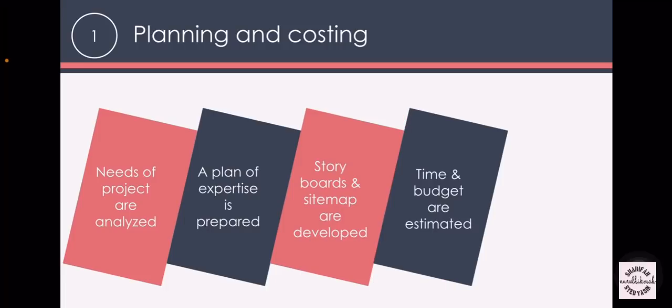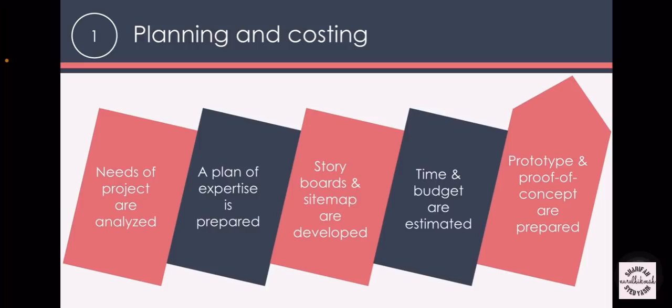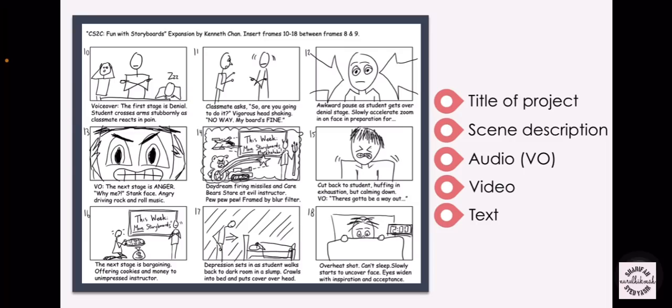Then the time and budget are prepared. Lastly, a short prototype or proof of concept is prepared. A storyboard must contain a title of a project, the scene description, the audio or voiceover description, the video description, and the text description. In a nutshell, a storyboard must contain all of the explanation and description of a particular scene in a project.